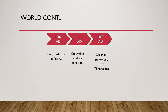In 1818 AD, cultivable land survey was added for taxation purposes. Graphical survey was done until 1857 AD, and later in the 19th century, with the advent of technology, theodolites came into existence. Still today, various new technologies like airborne satellites and drone images are used for cadastral survey.